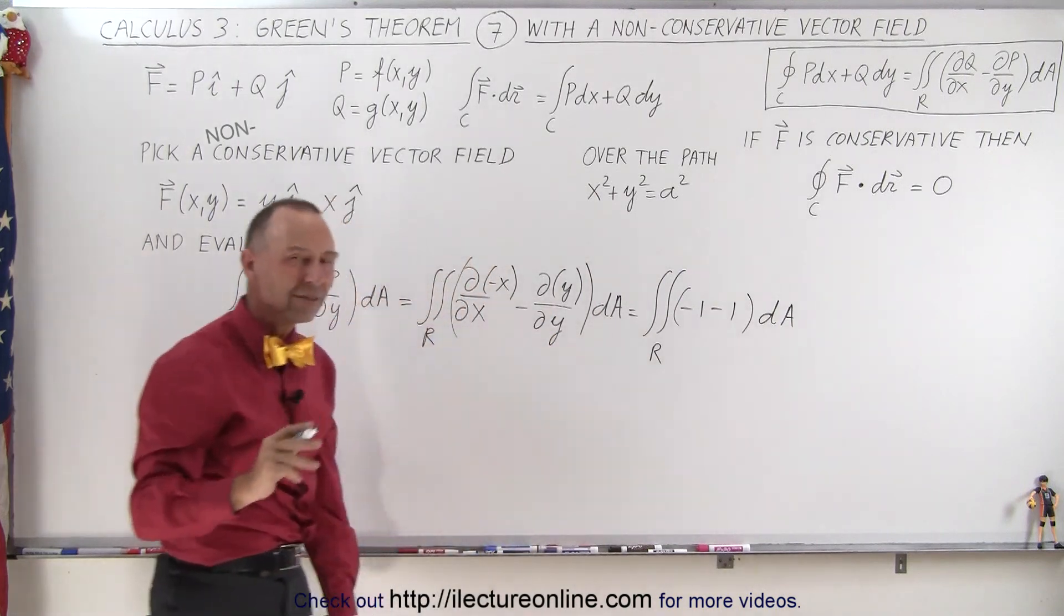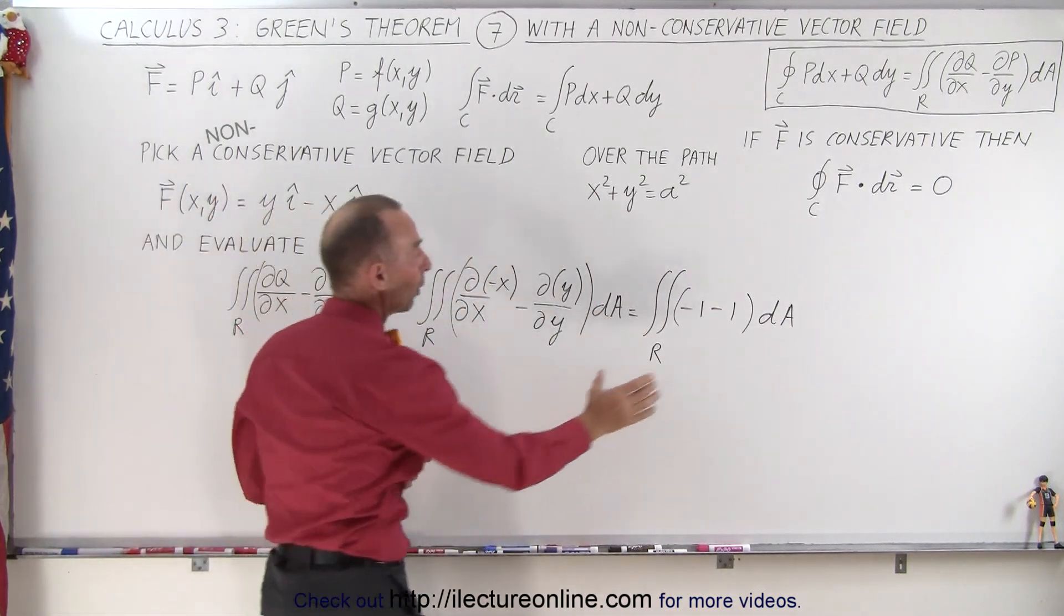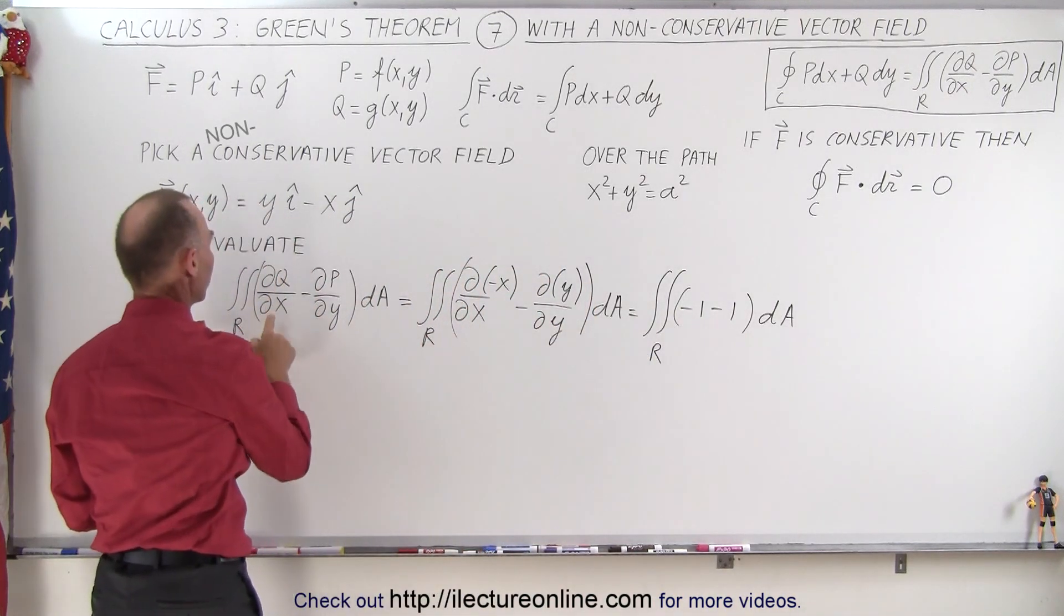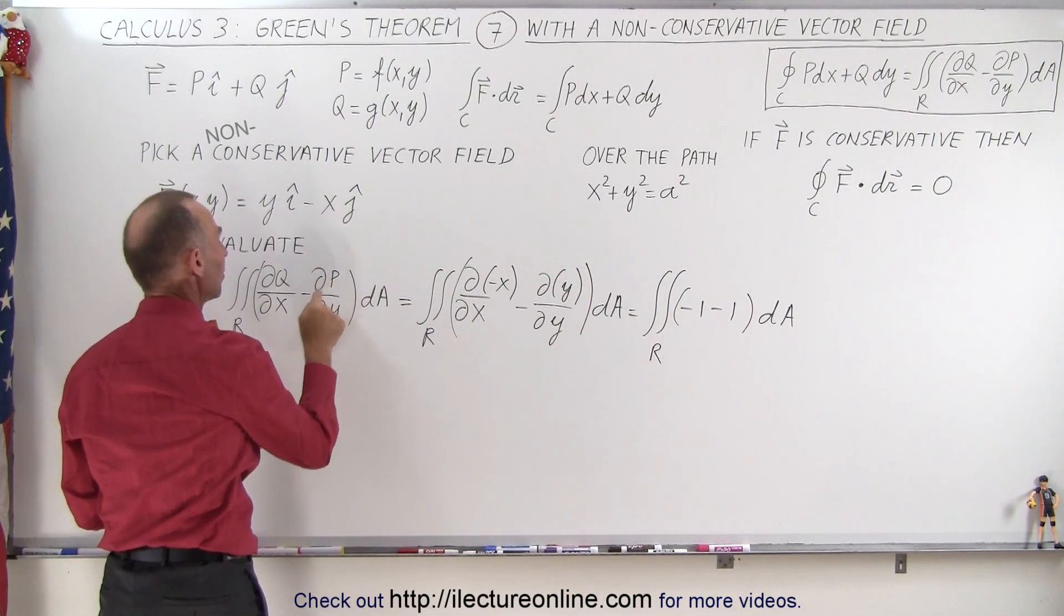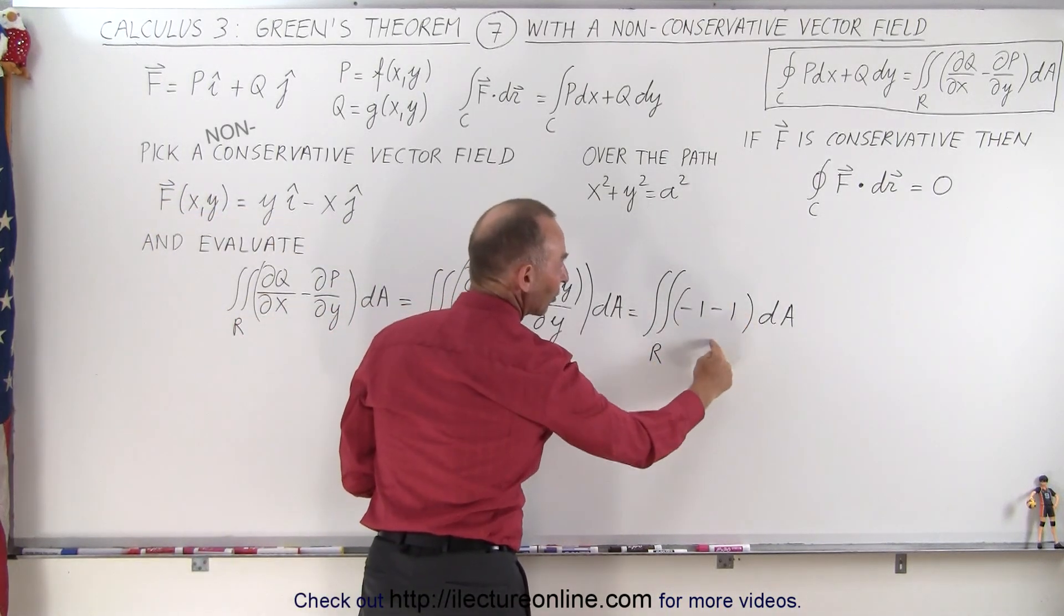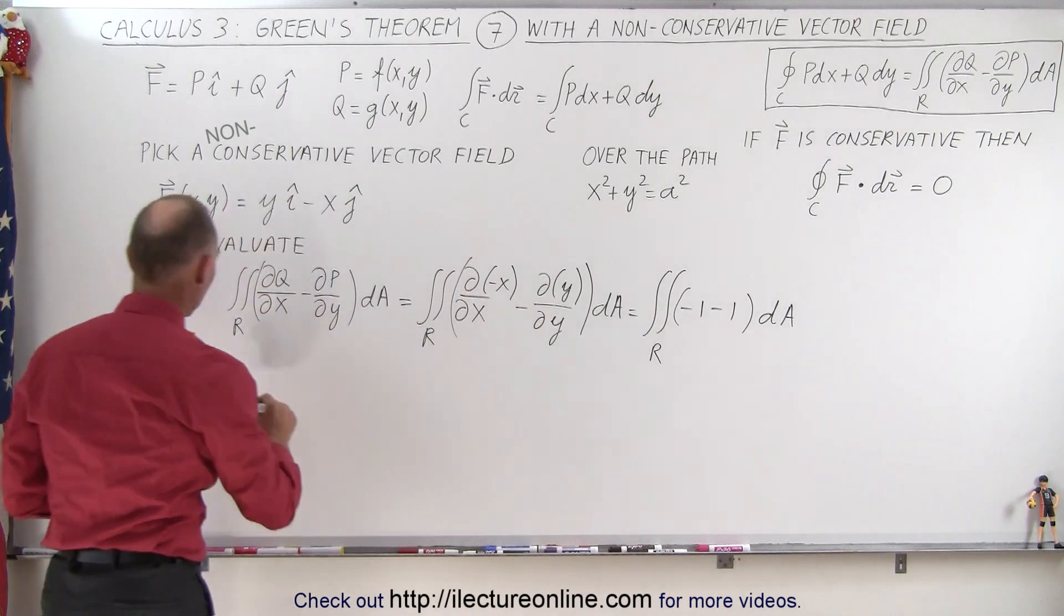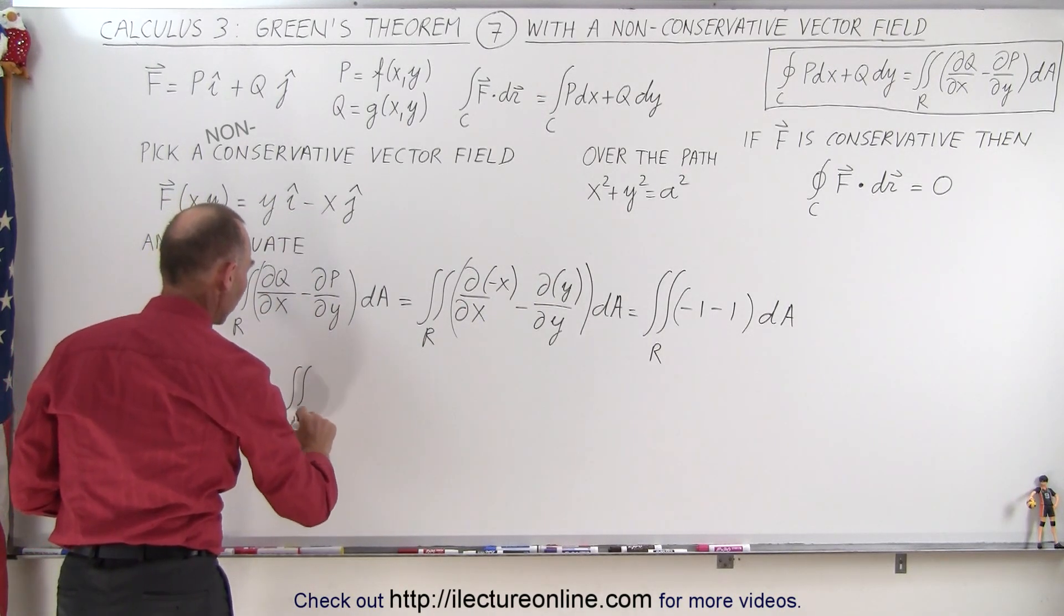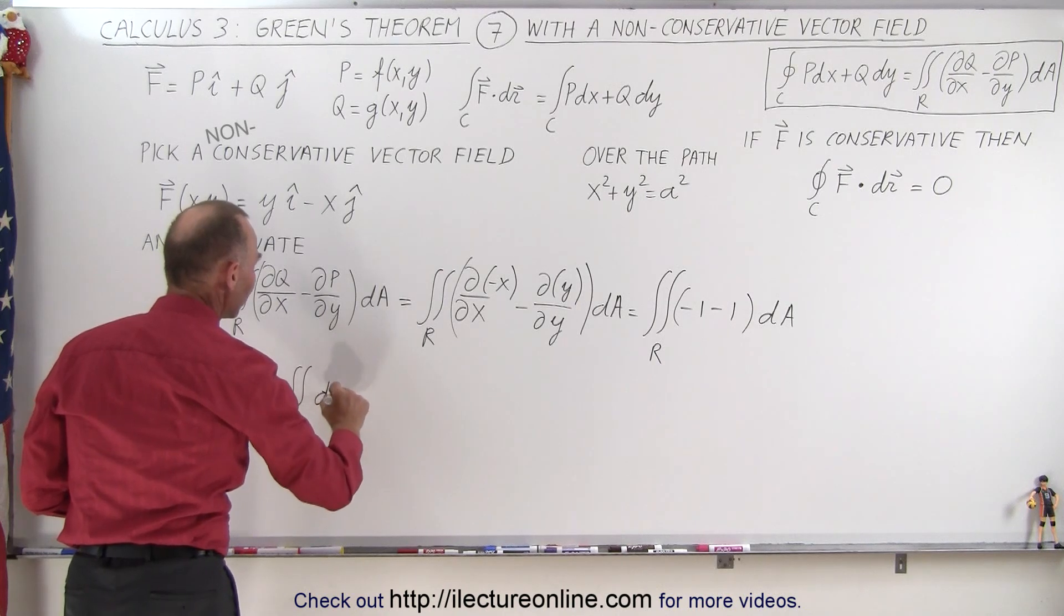Why is this a special case? Well, notice the quantity within the parentheses here, the partial of Q with respect to x minus the partial of P with respect to y, is actually a constant. And when that's a constant, I can take it outside the integral sign. So this becomes equal to a minus 2 times the double integral over the region times dA.